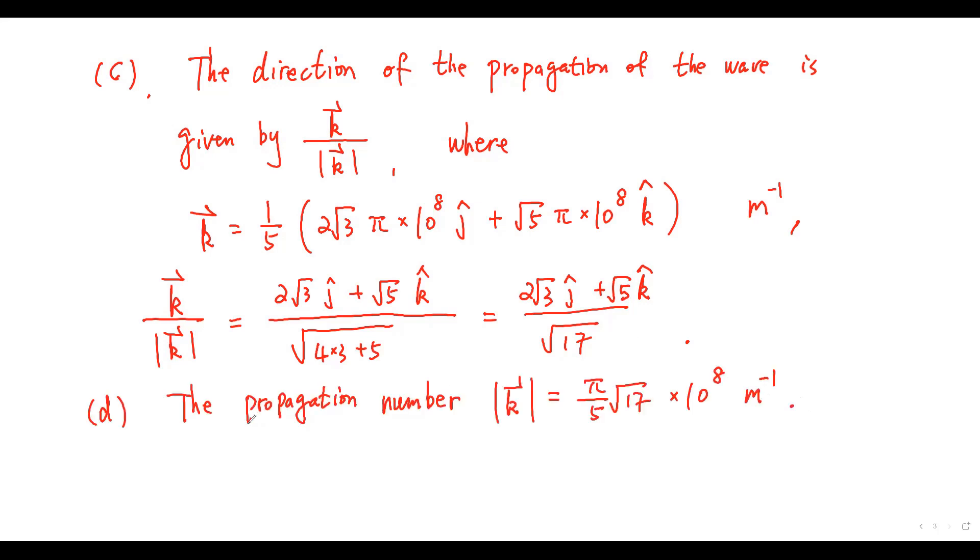The propagation number is given by this value. The wavelength, lambda equals 2π over K. This is about 24 nanometers.